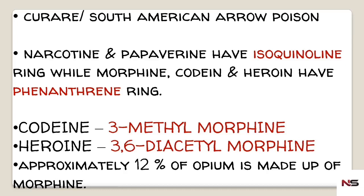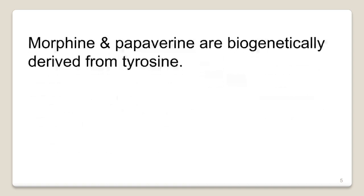Approximately 12% of Opium is made up of Morphine. Morphine and Papaverine are biogenetically derived from tyrosine. Isoquinoline alkaloids are derived from phenylalanine and tyrosine, but out of these, Morphine and Papaverine are specifically derived from tyrosine.